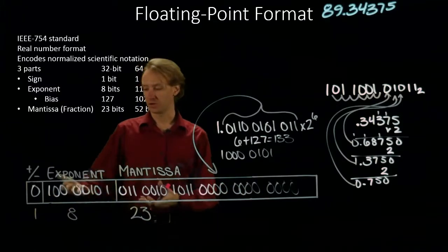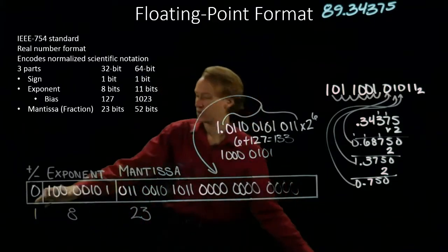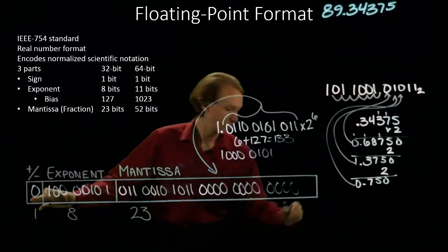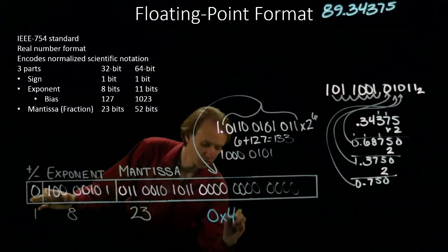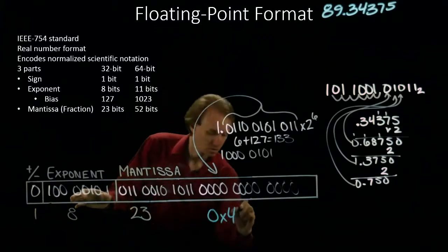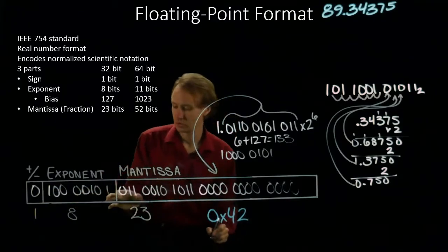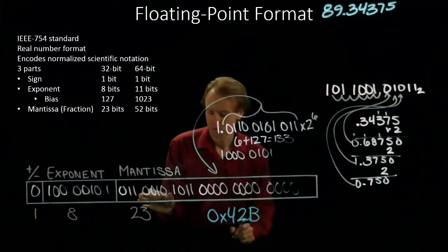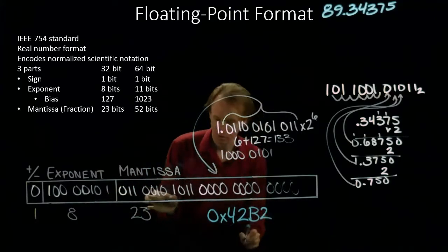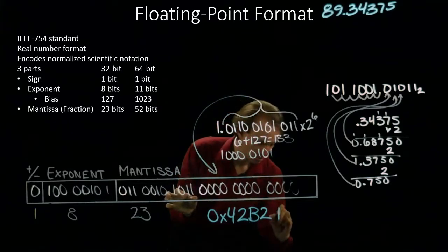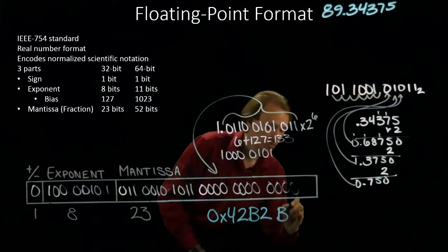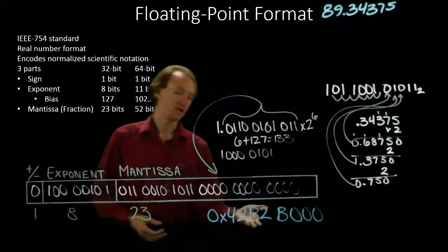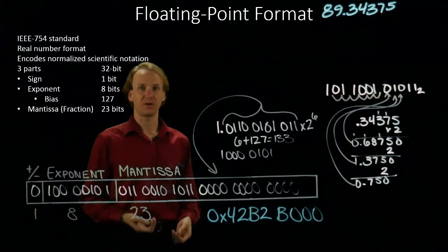And there's my binary floating point number. Again, I can convert this to hexadecimal by finding blocks of 4 and converting them. So, I've got 4, 2, B, 2, B, 0, 0, 0. So, there's the hexadecimal equivalent of our binary floating point number.